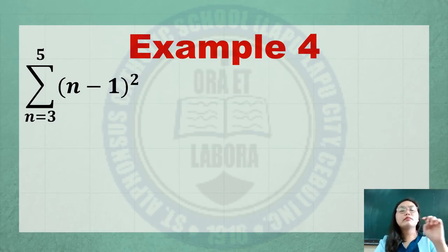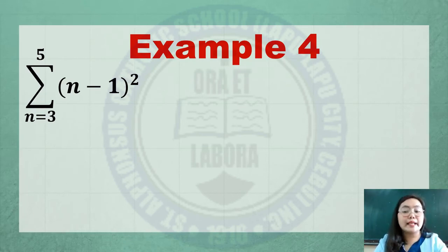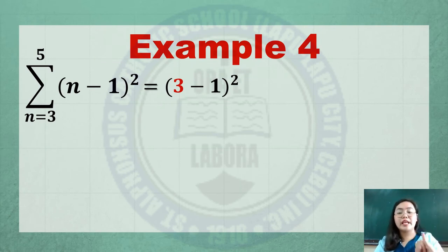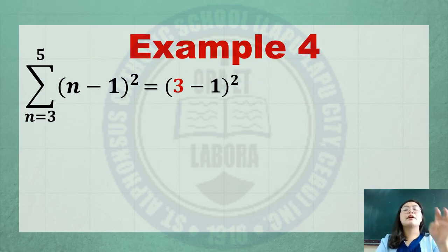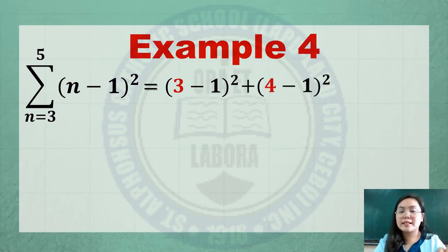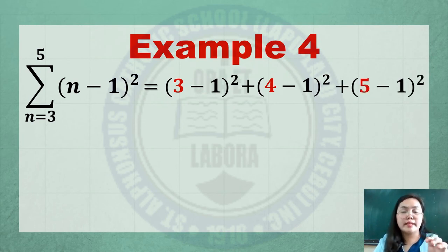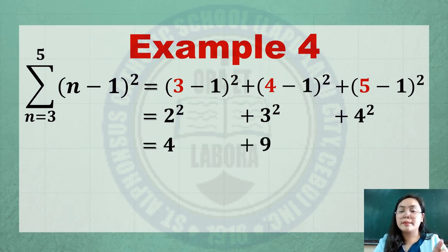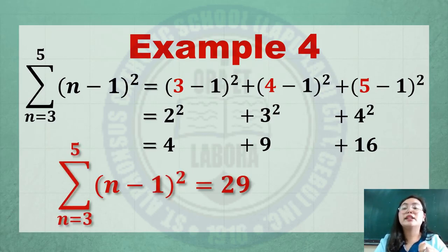Example number 4: summation of quantity n minus 1 squared from n equals 3 to n equals 5. Replace the value of n starting from 3 until 5, so the values of n are 3, 4, and 5. Simplifying: 3 minus 1 is 2, so 2 squared; 4 minus 1 is 3, so 3 squared; 5 minus 1 is 4, so 4 squared. Simplifying: 2 squared is 4, 3 squared is 9, 4 squared is 16. Then get the sum. The answer is 29.